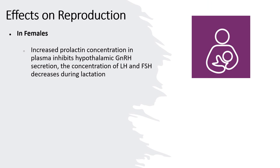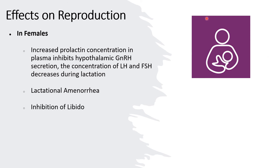Effects on reproduction in females: increased prolactin concentration in plasma inhibits hypothalamic gonadotropin releasing hormone secretion, so the concentration of LH and FSH decreases during lactation. This prevents ovulation and causes amenorrhea, which is called lactational amenorrhea. Prolactin also controls some reproductive behaviors such as inhibition of libido and stimulates maternal behavior — that is, love, affection, and protective behavior of the mother for the newborn through breastfeeding.